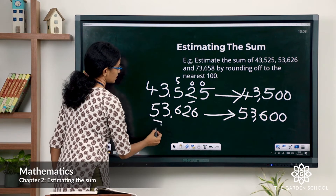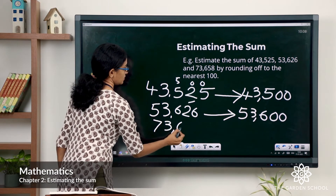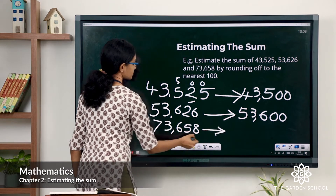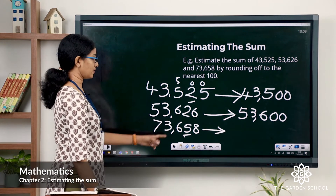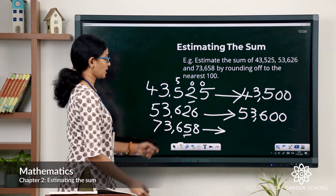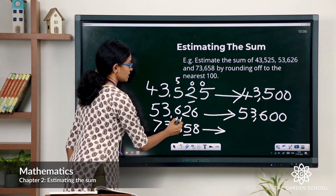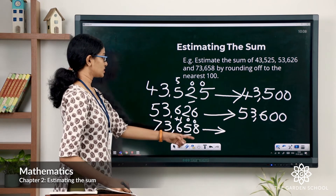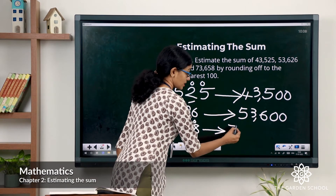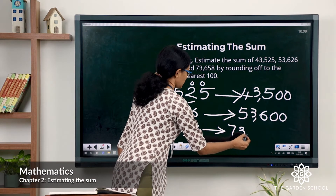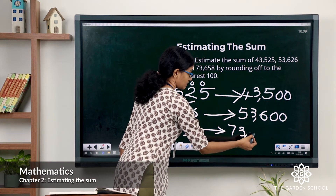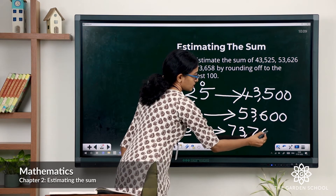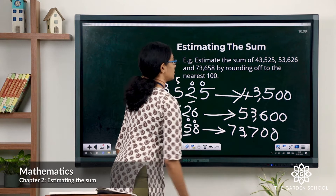Now the third addend, 73,658. Here in the tens place you have 5, so you have to add 1 to the rounding digit and change the tens and ones to zeros. So 73,658 rounded off to the nearest 100 gives you 73,700.